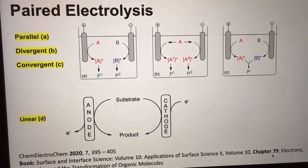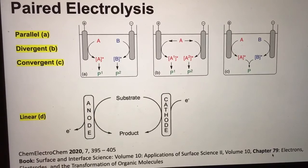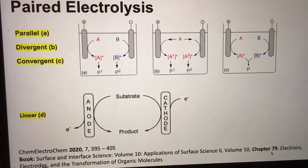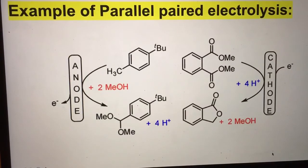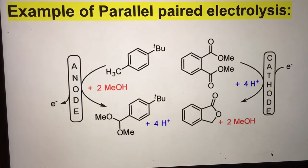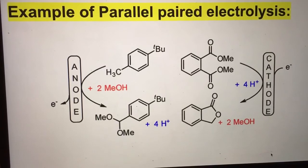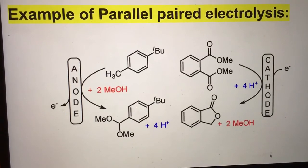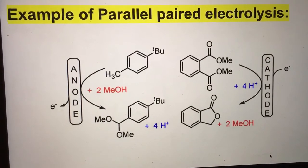So here is given one example of parallel paired electrolysis. In this parallel pair electrolysis, the side products proton and methanol of the individual electrode reactions are necessary for the reaction at the counter electrode.